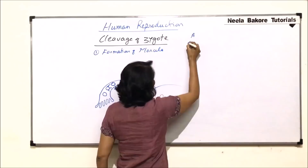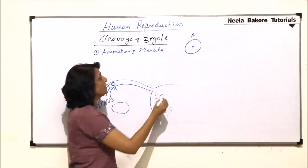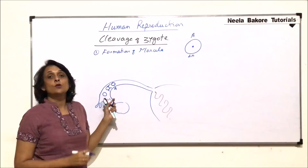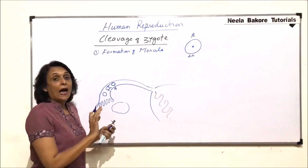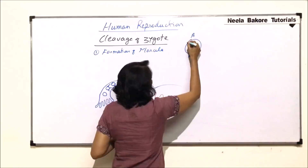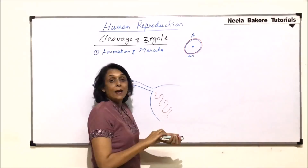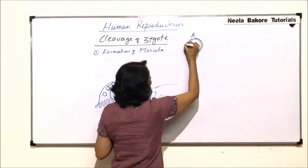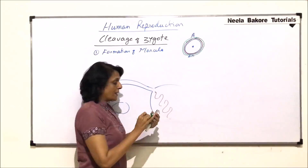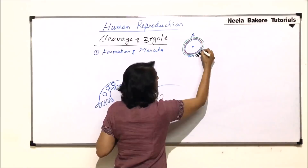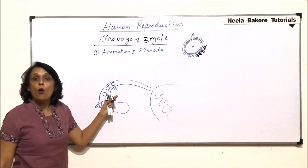A is the zygote. The zygote has a diploid nucleus, 2N — in case of human beings, 23 chromosomes from sperm and 23 chromosomes from the egg. Outside the egg, the membranes which are there include the vitelline membrane, then there is zona pellucida — this zona pellucida is also intact — and around the zona pellucida there are follicular cells which make the corona radiata. That means, the zygote has all these layers around it.